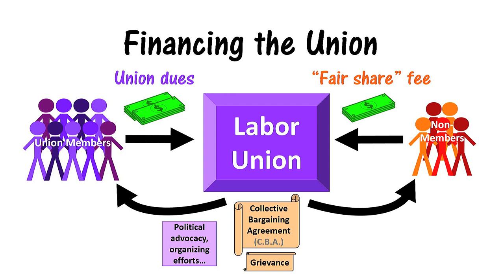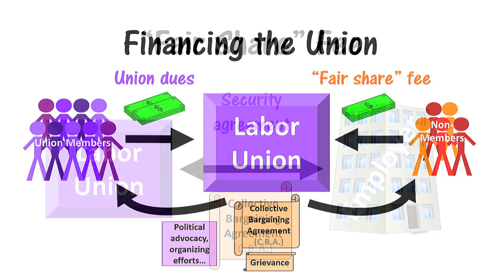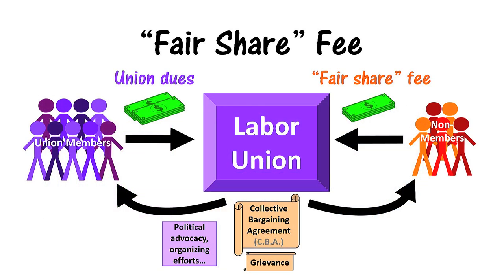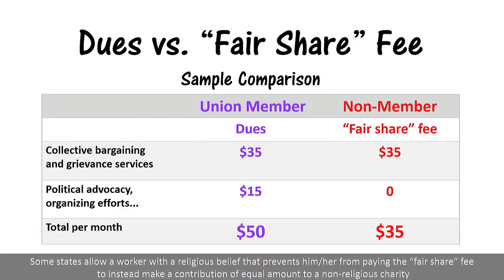This fair share fee, also called an agency fee, is authorized by a security agreement that is negotiated as part of a collective bargaining agreement made between a union and employer. In other words, a union and employer agree that non-union members must pay the fair share fee because they are entitled to full and equal union representation, even if they choose not to be members. The fair share fee is not the same amount that union members pay in dues; it covers only the amount for collective bargaining and grievance services, as determined by audits of the union's finances.